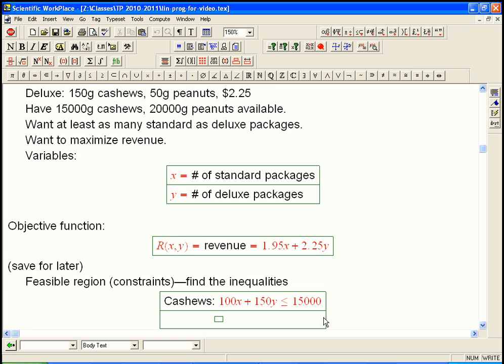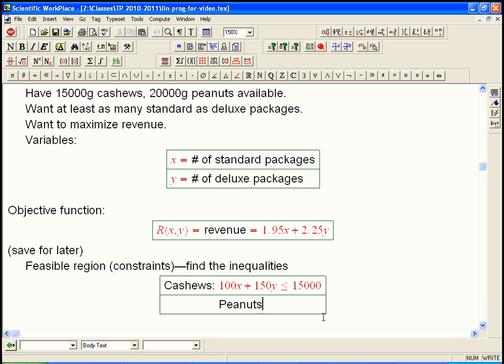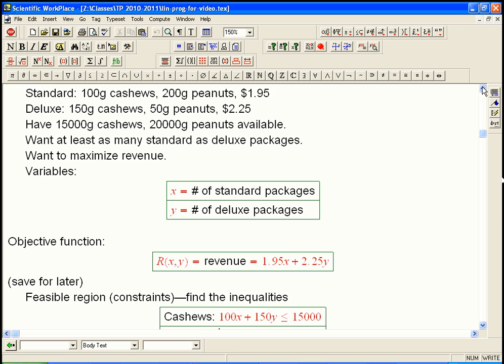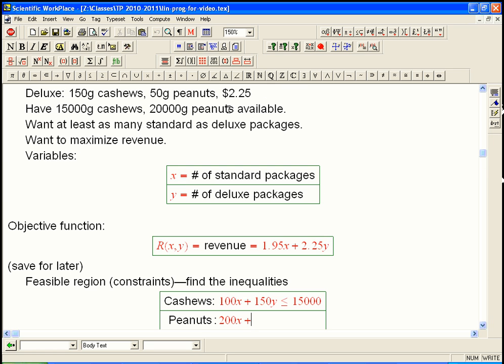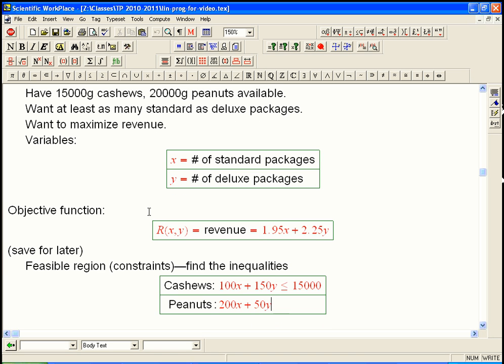That's cashews used by standard packages. Then we're going to have 150y. That's cashews used by how many deluxe packages we have. And that can be at most 15,000. Of course, what makes it an inequality problem is that at most. Now there's going to be an inequality for peanuts based on the limited supply of peanuts. So there's always going to be inequalities based on limited supplies in these kinds of problems. The standard has 200 grams of peanuts times x.